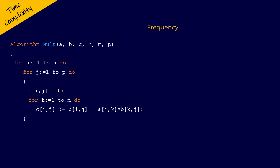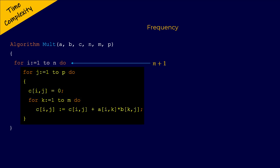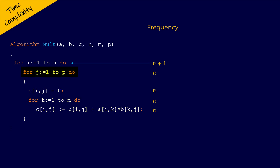Now let us look at the pseudocode of this algorithm. The first statement is the for loop for I from 1 to N. This statement will execute for N plus 1 times. The statements inside the for loop of I will execute for N times. We have an inner for loop inside the outer for loop, and this inner for loop of J will itself execute for P plus 1 times. So actually the for loop of J will execute for N multiplied by P plus 1 times.